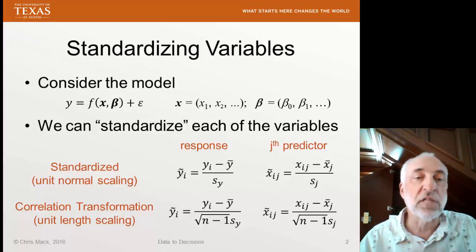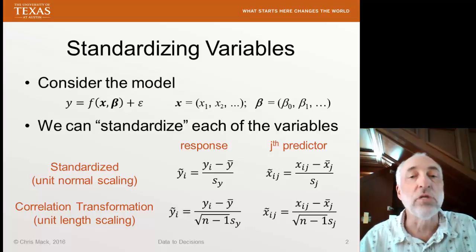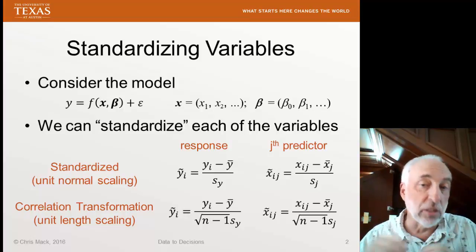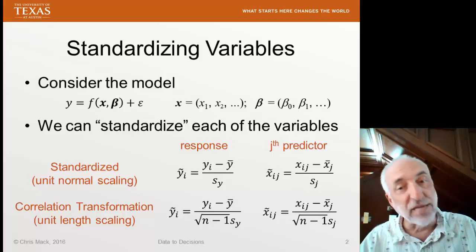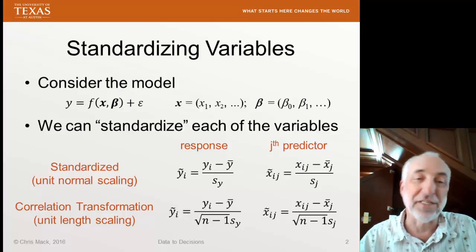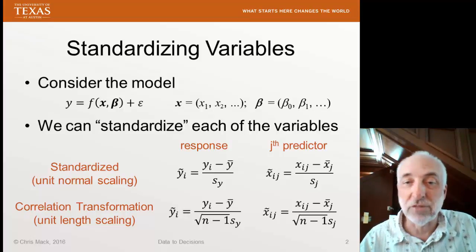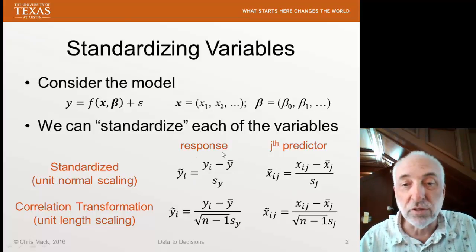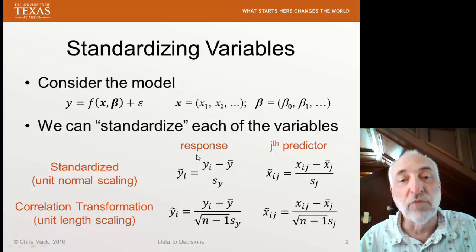The most common standardization of these variables is called unit normal scaling. It's where we take the variable, subtract off its mean, divide by its standard deviation. We've seen this kind of standardization a lot - z normal scores or t-scores perform this kind of thing, but now we're doing it with the data.